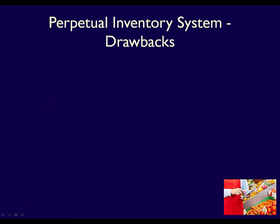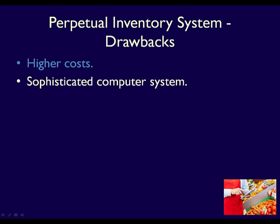Are there any disadvantages to the perpetual inventory system? Absolutely. A system that tracks inventory continually means additional costs, both in the form of labor — employees that have to put everything into a computer system — and infrastructure. The business likely has an expensive computer system tracking both purchases and sales of inventory. These are called point-of-sale systems, and you see one every time you shop at a major retailer like Walmart or Costco, which scan your purchases using a point-of-sale system.